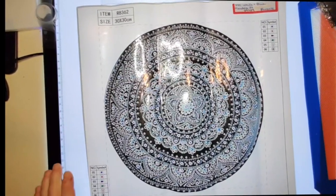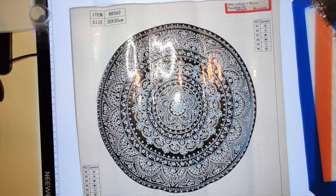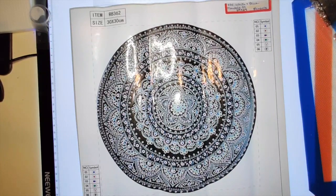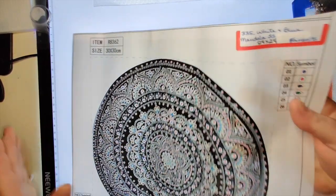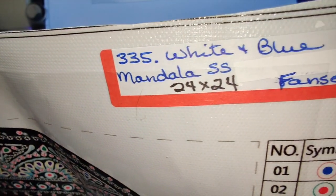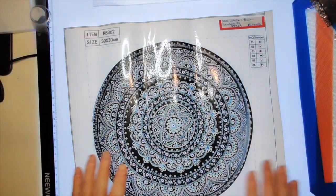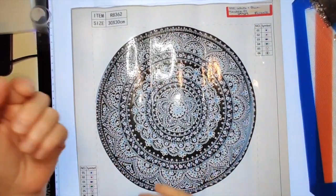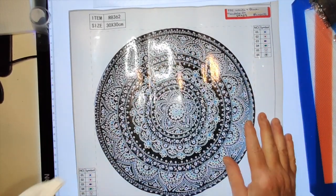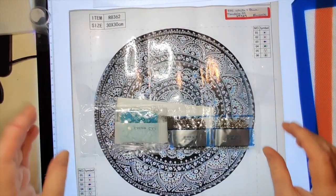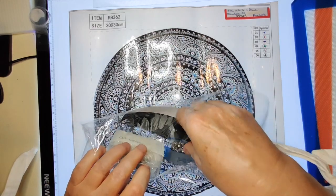It's Rose and I am just about to start number 335, the white and blue mandala special shaped diamond painting that I got from fan cells. It came up in the penny pick just a few minutes ago.